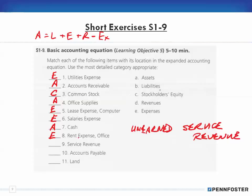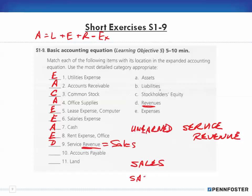Service revenue: normally when you see the word 'revenue,' that equates to sales and would be a revenue account — category D. In this case it's service revenue, so that comes under revenues. The account could just as easily have been called 'sales' or 'sales revenue' — these are all revenue accounts.